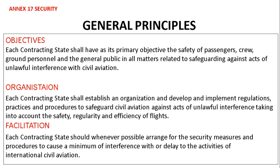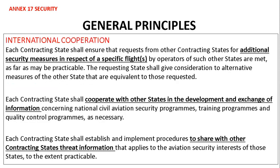Each contracting state should, whenever possible, arrange for the security measures and procedures to cause a minimum of interference with or delay to the activities of international civil aviation. International cooperation: each contracting state shall ensure that requests from other contracting states for additional security measures in respect of a specific flight are met as far as practicable.